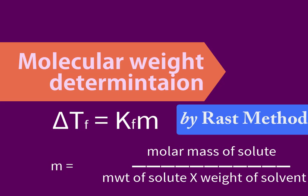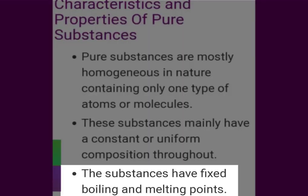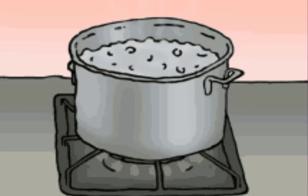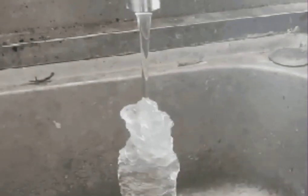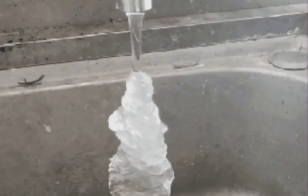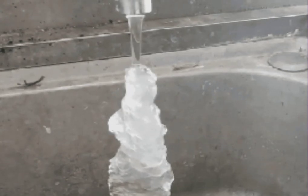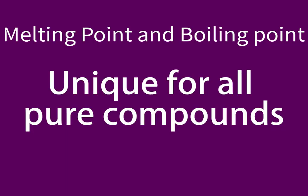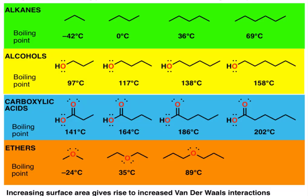For pure solvents like water there are some characteristic features like the boiling point — water boils at 100 degree Celsius — and the freezing point — water freezes at 0 degree Celsius. Those values are constant and are the characteristic or unique feature of that particular component. This is the same for all pure substances; they will possess some unique physical properties.